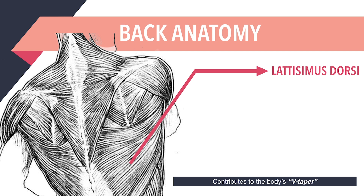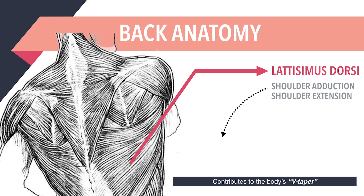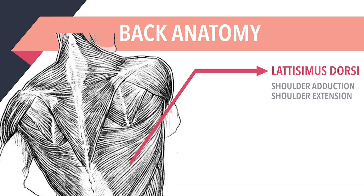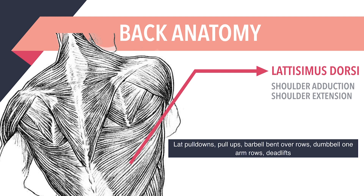The lats are responsible for shoulder adduction and shoulder extension — the former meaning the bringing of the arms towards the body from the side, and the latter, the bringing of the arms towards the body when placed at the front. The lats can be targeted through lat pull-downs, pull-ups, barbell bent-over rows, dumbbell one-arm rows, and deadlifts.